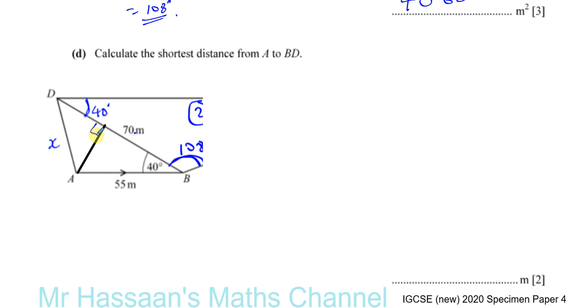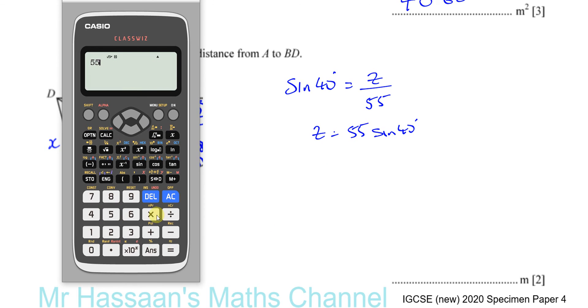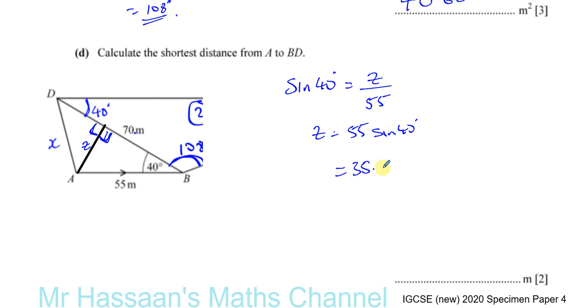There's numerous ways we can do this. We could use this triangle here. Let's call this Z. The side Z is opposite 40 degrees. This is a right-angled triangle. We could use so katoa. This is the hypotenuse. We could say the sine of 40 is equal to Z over 55, opposite over hypotenuse. So Z is equal to 55 times the sine of 40. This is probably the easiest way to do this particular question. So you've got 55 times the sine of 40 degrees, which gives us 35.353. So that's going to give you 35.4 meters as the shortest distance from A to BD.